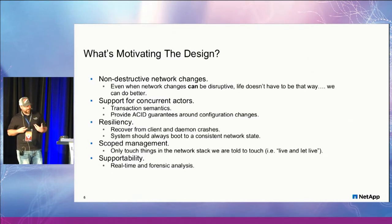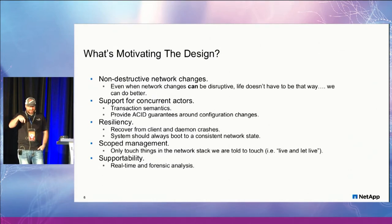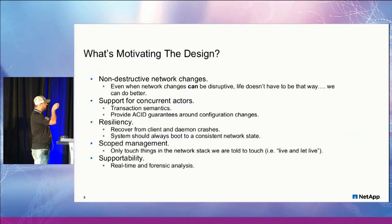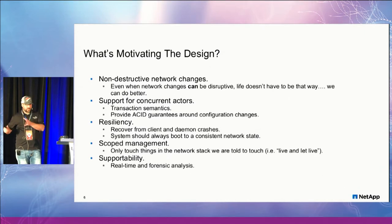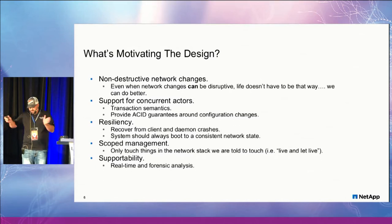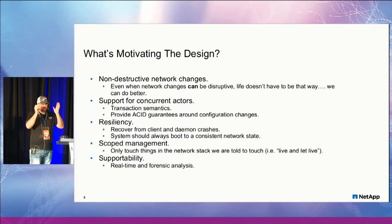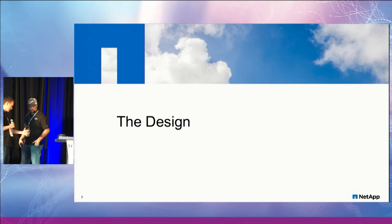We also need that any part of the persistent config, if the system crashes, has to be consistent — that's part of that ACID durability guarantee. Scope management is really important: if we're told to manage a set of interfaces, we manage those and those only. If Docker is running and containers are creating bridges, don't touch those — that's not our domain. If something comes over into our side we'll keep trying to repair it and end up fighting it. And then supportability — that's more around logging.